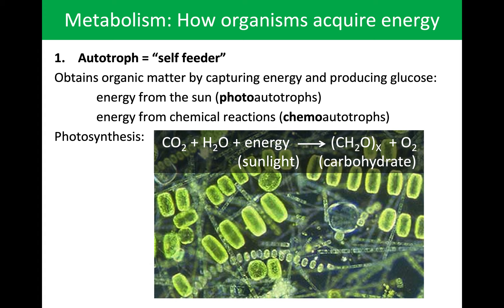Thinking about how organisms acquire energy, we partition things into two camps: autotrophs and heterotrophs. Autotrophs basically means self-feeder — it provides its own energy, doesn't require consuming food like plants or cheeseburgers. It makes its own energy by producing glucose, and it can do this in two ways: as a photo-autotroph performing photosynthesis, or using a chemical reaction making it a chemo-autotroph. Chemo-autotrophs are less abundant but found in deep ocean environments with magma and very high temperatures.